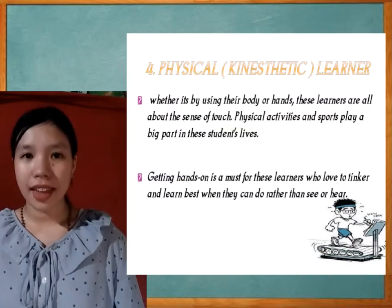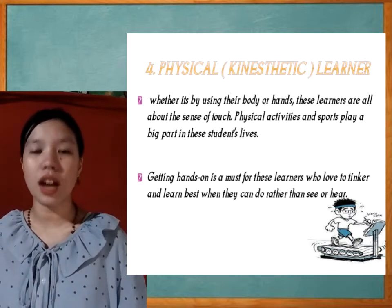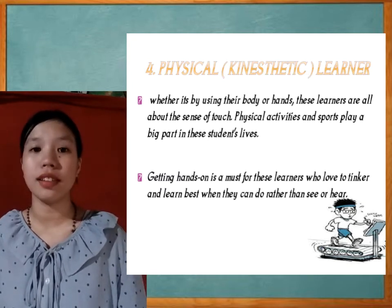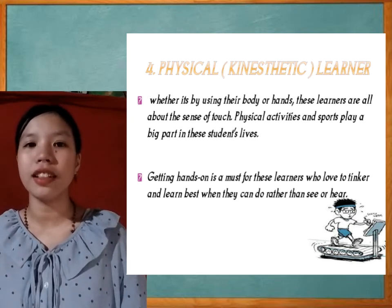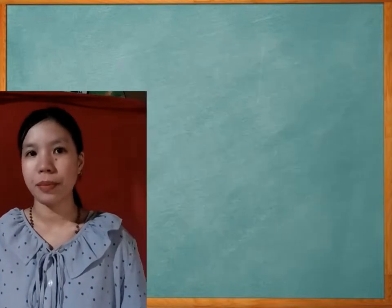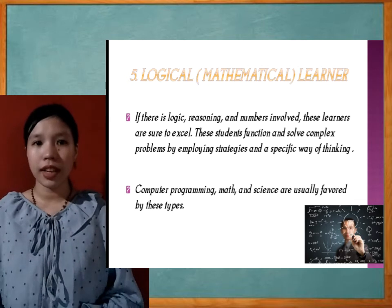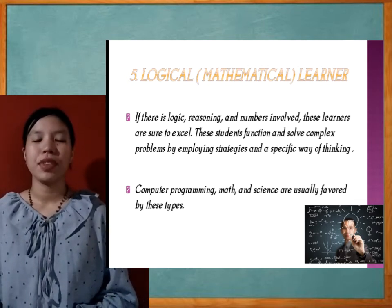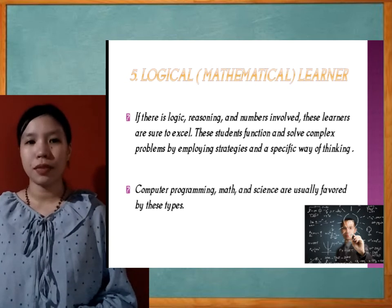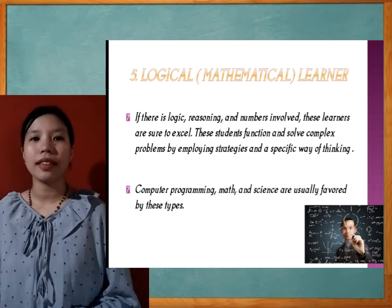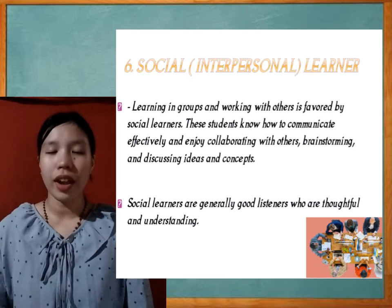Fourth is physical or kinesthetic learners. Whether it's by using their body or hands, these learners are all about the sense of touch. Physical activities and sports play a big part in these students' lives. Getting hands-on is a must for these learners, who love to tinker and learn best when they can do rather than see or hear. Number five is logical or mathematical learners. If there is logic, reasoning, and numbers involved, these learners are sure to excel. These students solve complex problems by employing strategies and a specific way of thinking. Computer programming, math, and science are usually favored by these types.